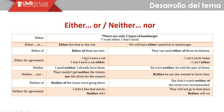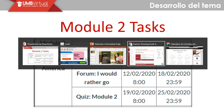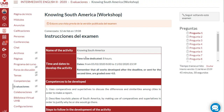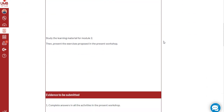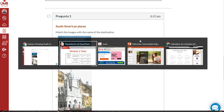Ahora vamos a hacer la revisión de las actividades programadas para este segundo módulo. La primera es una tarea llamada 'Now in South America', disponible hasta el 11 de febrero a las 23:59. Es simplemente seguir las instrucciones de cada actividad y cada pregunta, haciendo uso completo y correcto de la gramática que se está estudiando.